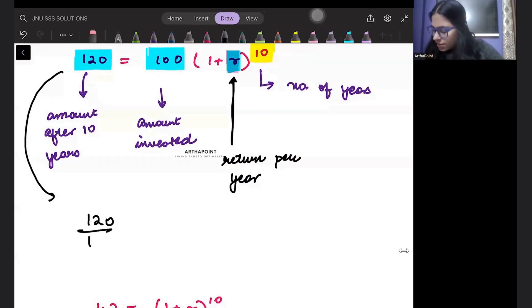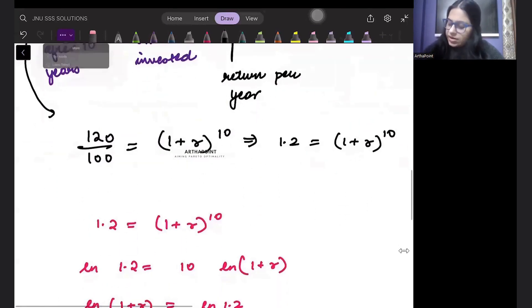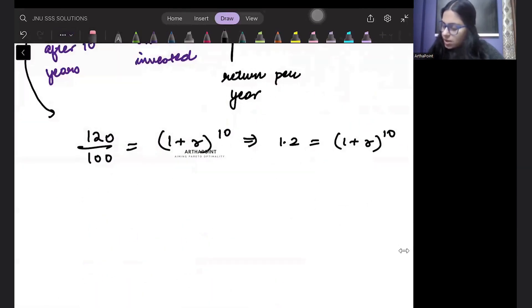120 divided by 100 will be equal to 1 plus R to the power 10. It means 1.2 will be 1 plus R to the power 10. Now you can go ahead and take log on both sides.